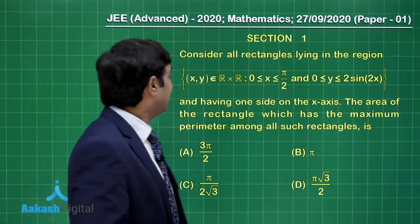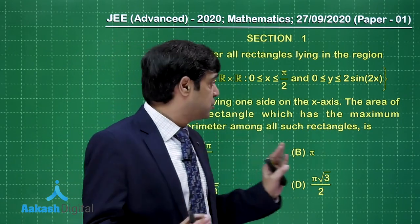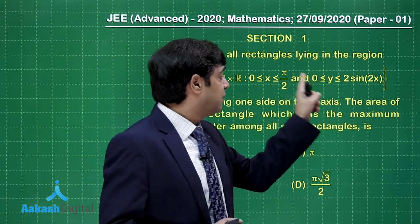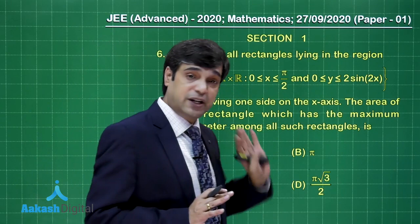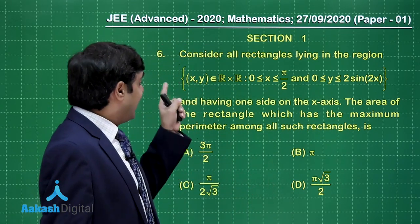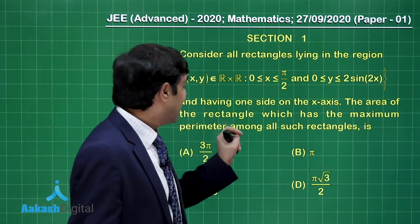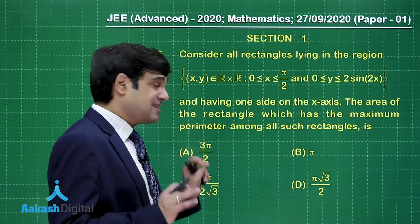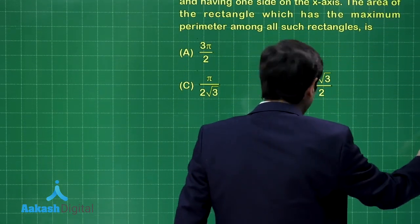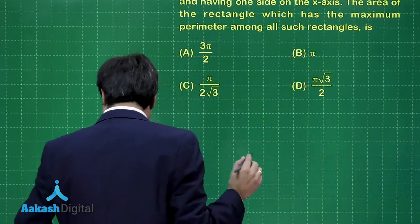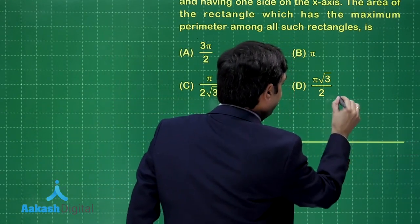Consider all rectangles lying in the region x, y belonging to R cross R, x is in the interval 0 to pi by 2 and y is in the interval 0 to 2 sin 2x. So these are the two boundaries, y equals 0 and y equals 2 sin 2x. And having one side on the x-axis, the area of the rectangle which has the maximum perimeter among all such rectangles, multiple concepts integrated. Let us try out. Here we can start with the coordinate system. Say x-axis and y-axis drawn.